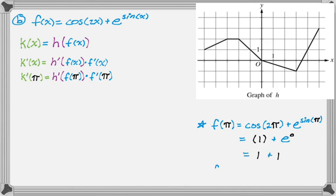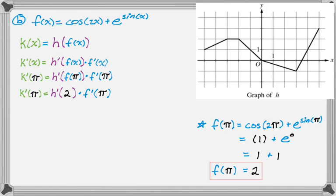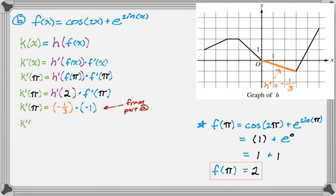Cosine of 2π is 1, and sine of π is 0, so f(π) = 1 + e⁰ = 1 + 1 = 2. So k'(π) = h'(2) times f'(π). Looking at the graph of h at x = 2, that point is on a line segment with slope negative 1 third. So h'(2) = -1/3, and multiplying by f'(π) = -1 from part A gives k'(π) = positive 1/3.